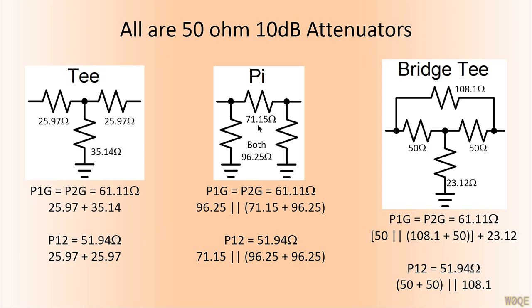For the pi attenuator, a little more complicated but not too much. Pin 1 to ground is these two resistors in series, that combination in parallel with this resistor. Again, 61.11 ohms. Same for P2 to ground. From P1 to P2, it's these two resistors in series in parallel with this resistor. Again, 51.94.